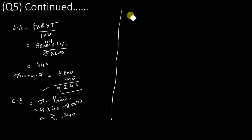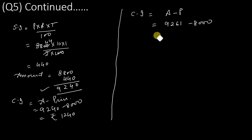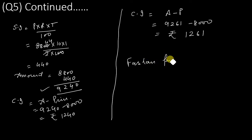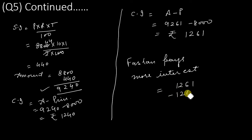Compound interest for Farhan = Amount minus Principal = 9,261 minus 8,000 = ₹1,261. Now, who pays more interest? Ahmed paid ₹1,240 and Farhan paid ₹1,261, so Farhan pays more interest. The difference is 1,261 minus 1,240 = ₹21. Farhan pays ₹21 more interest than Ahmed.